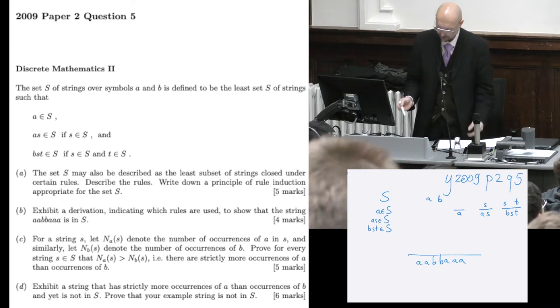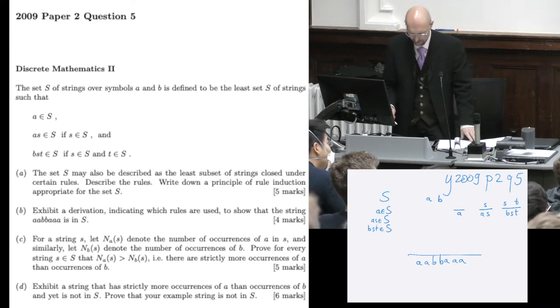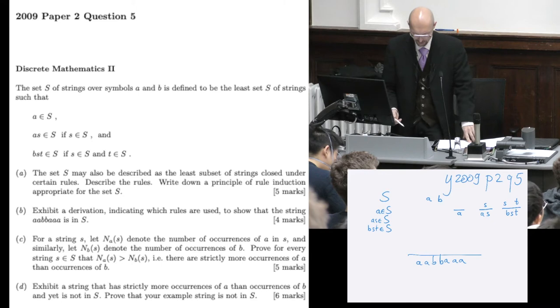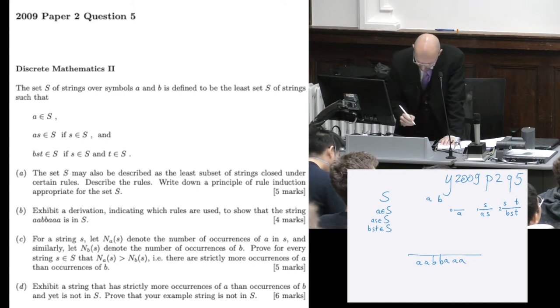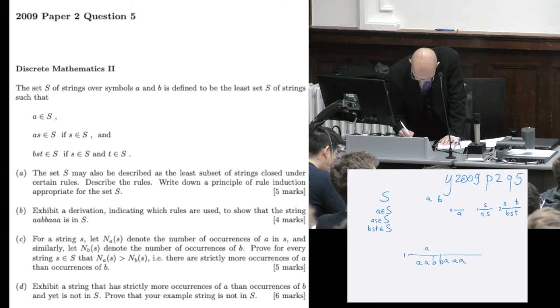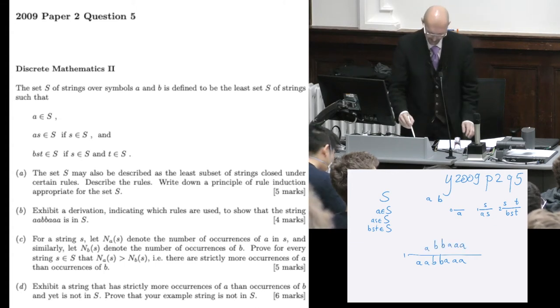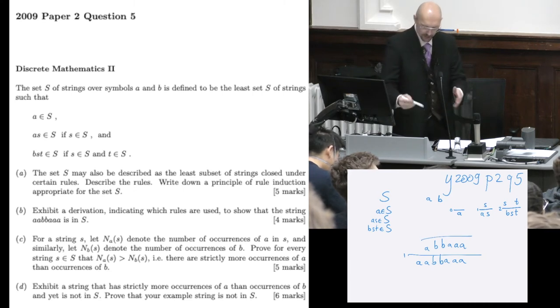And here you just have some fun to say, well, to generate this, I must have used which rule? Well, I've added an A, so I probably used, let's number these things, 0, 1, 2. I probably used this one from something that must have been the same without the A. A, B, B, A, A, A. And something else to generate this one, and so on. And you do that, and you earn yourself another four marks.